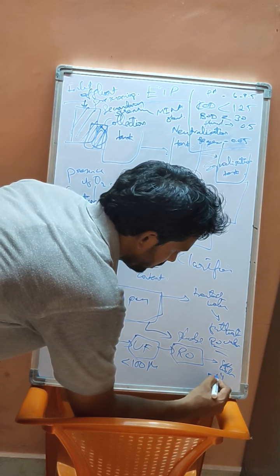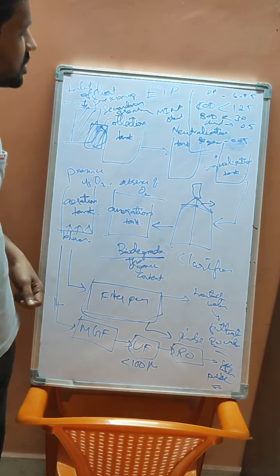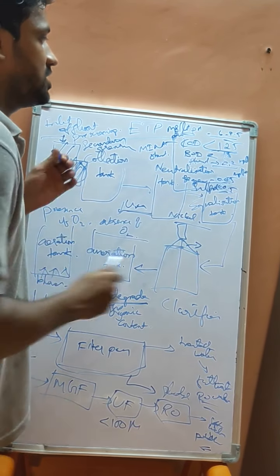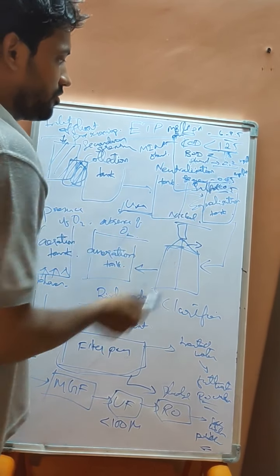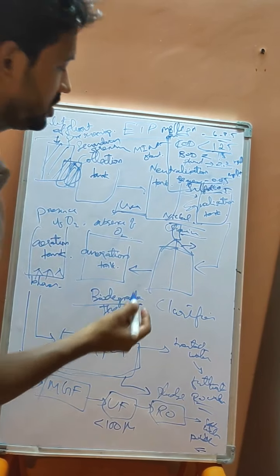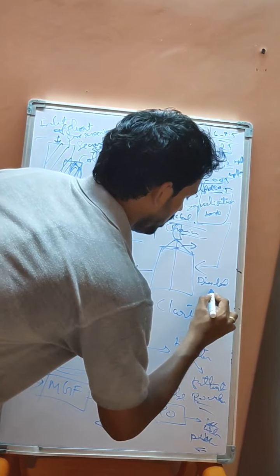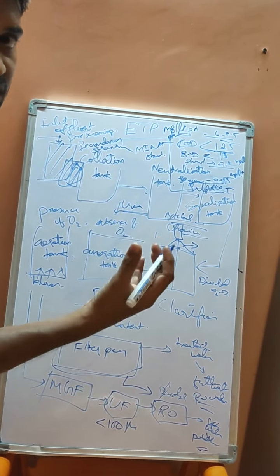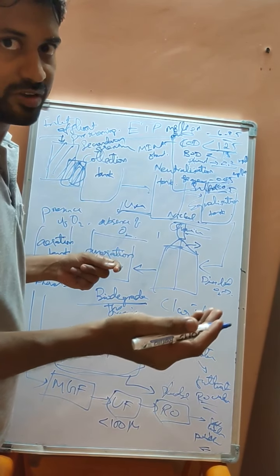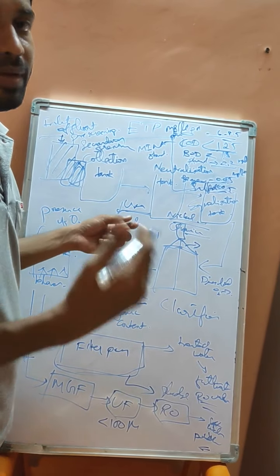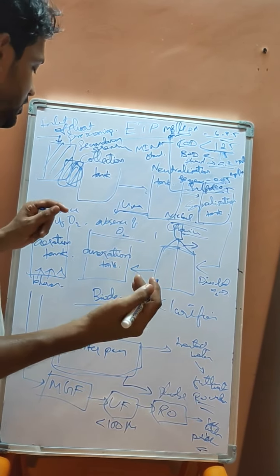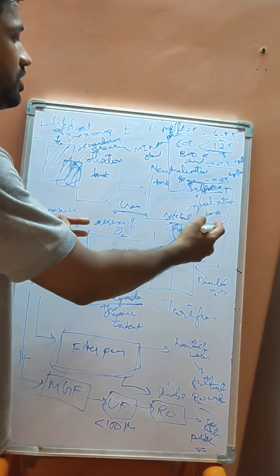The output after RO is used as soft water or for portable use. Key disposal parameters to note: COD should be less than 125, BOD should be less than 30, phenol is 0.2 mg/L, and certain heavy metals like nickel, chromium, and sulfide also have specified limits. Dissolved oxygen and conductivity are also measured — conductivity is especially important for DM water preparation. For solid-based effluent plants, the process can stop after equalization without needing all further steps.